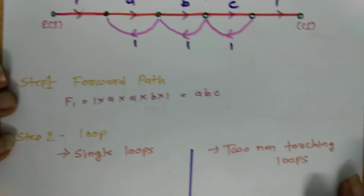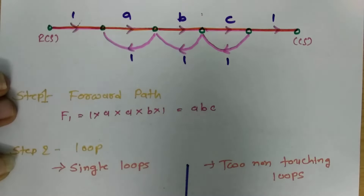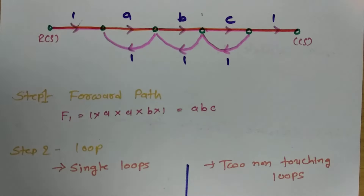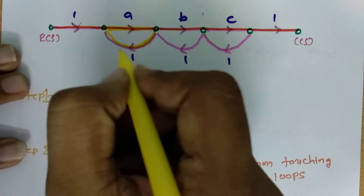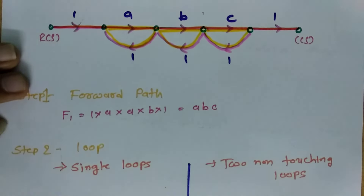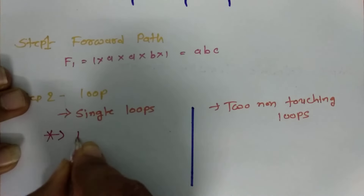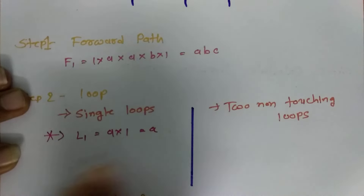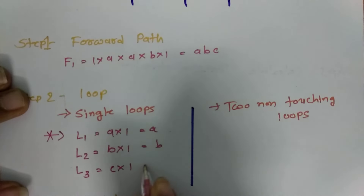Now let us solve the second step: single loops. In this signal flow graph, we can clearly see three loops. The first single loop gives L1 = A × 1 = A. The second single loop gives L2 = B × 1 = B. The third single loop gives L3 = C × 1 = C.